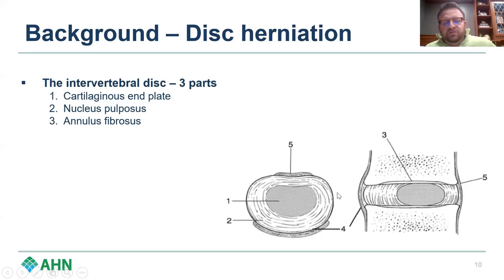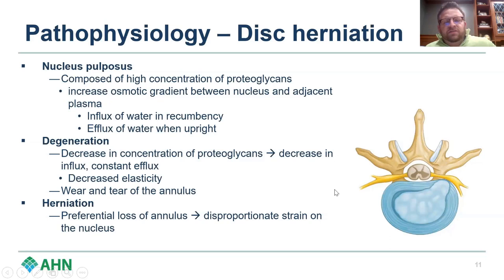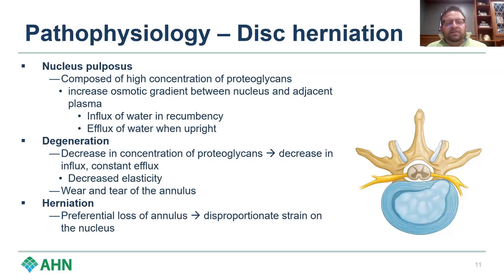Regarding the pathophysiology of disc herniation: the nucleus pulposus is composed of a high concentration of proteoglycans — this is the center of the disc and often the part that herniates out. There is an increased osmotic gradient between the nucleus and adjacent plasma, leading to an influx of water when recumbent and an efflux of water when upright. When the disc degenerates over time, there is a decrease in proteoglycan concentration and a decrease in water influx with constant efflux.